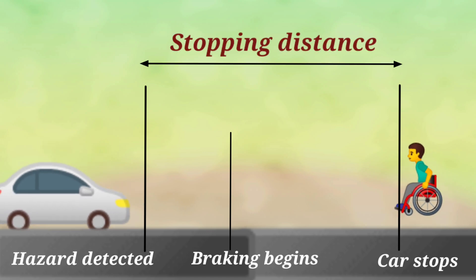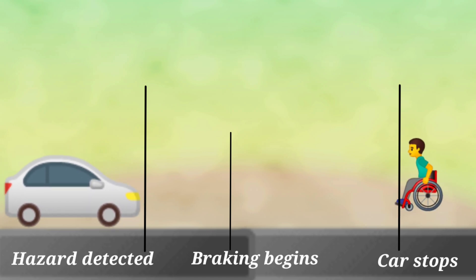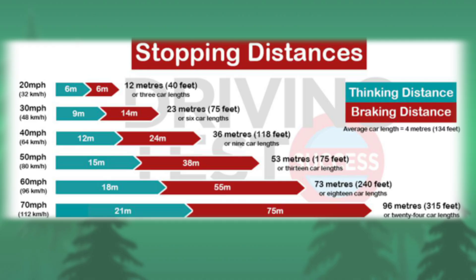This image best describes the stopping distance formula. For example, if you are traveling at 20 miles per hour then your thinking distance will be 6 metres and your braking distance will be 6 metres, which comes to a total stopping distance of 12 metres or 40 feet. If you are traveling at 30 miles per hour then your thinking distance will be 9 metres and braking distance will be 14 metres, which comes to a total stopping distance of 23 metres or 75 feet.